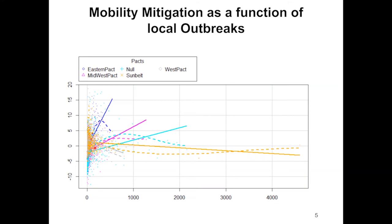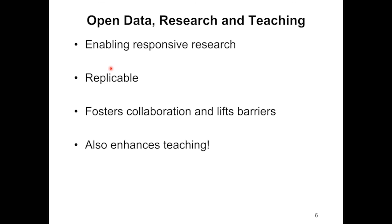We saw a huge outbreak in July and August in the Sunbelt southern states. This is just an example of how we use open data in our research. It helps us with responsive research — we and other researchers were able to get our hands on this data really fast and help influence policy to mitigate the pandemic.